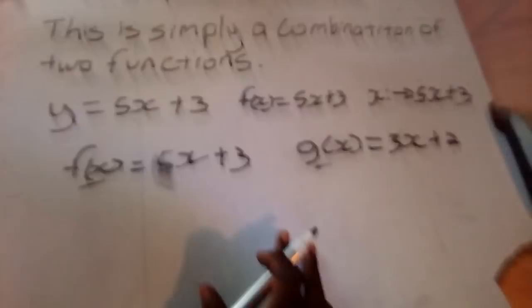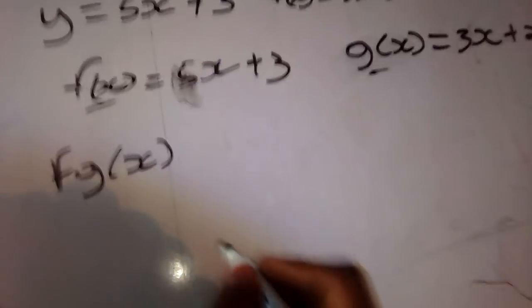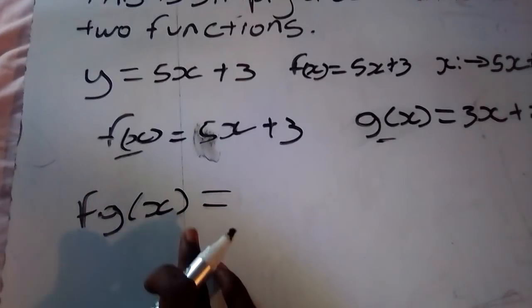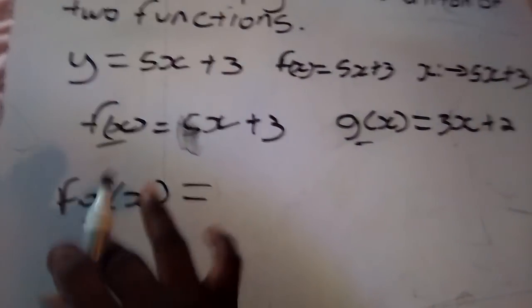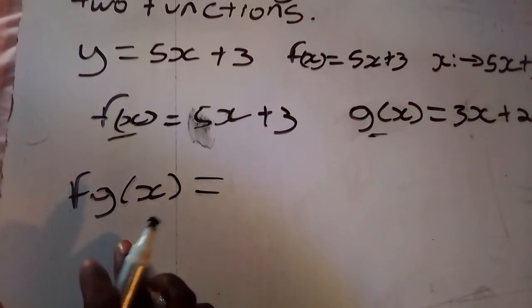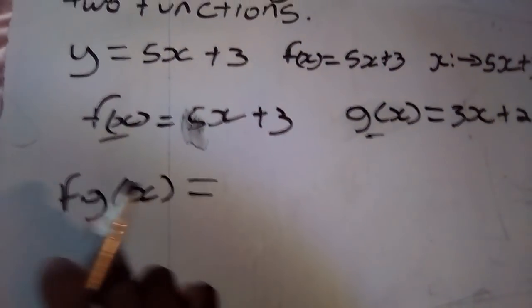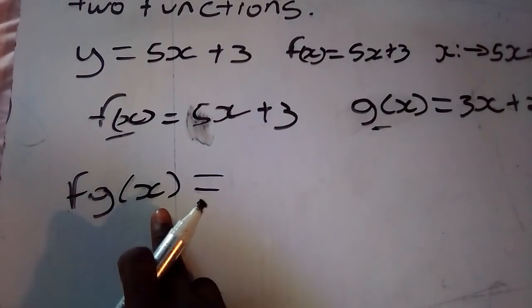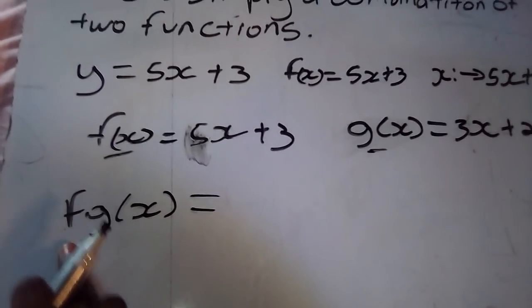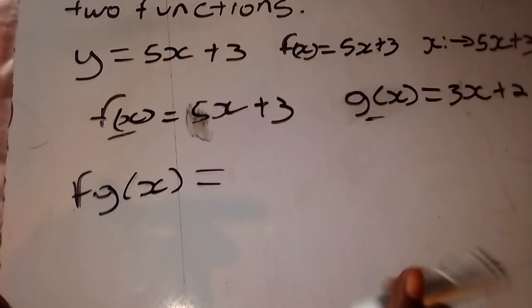In composite functions you'll see notation written like f(g(x)). This means you put g of x into f of x. The way to think about it: the function closest to the x is the one that gets put into the other function. Since g is closest to x here, we're going to put g of x into f.